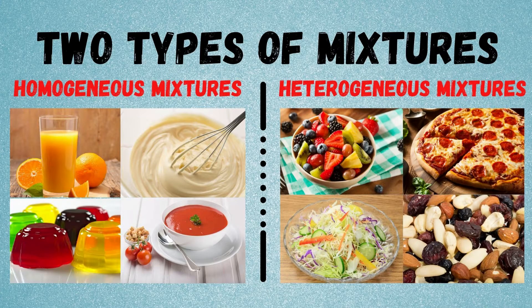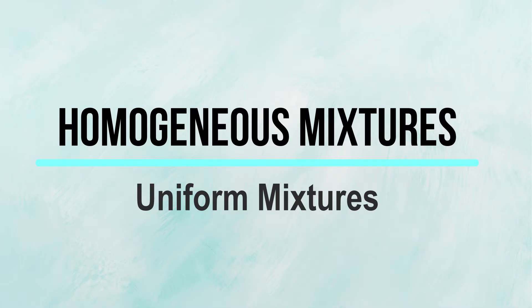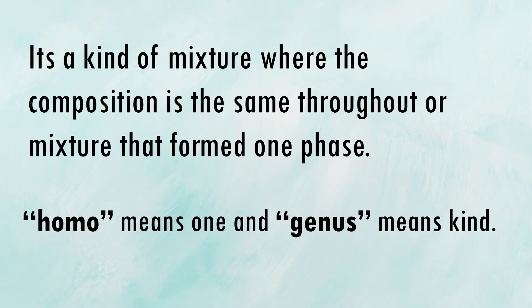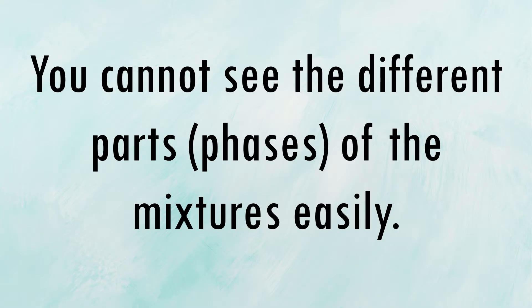The two types of mixtures: homogeneous mixtures and heterogeneous mixtures. Homogeneous mixtures, or uniform mixtures, are a kind of mixture where the composition is the same throughout, forming one piece. Homo means one and genus means kind. You cannot see the different parts or pieces of the mixture easily.